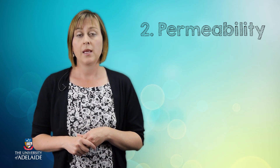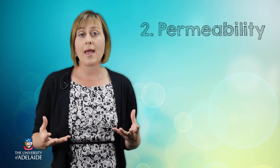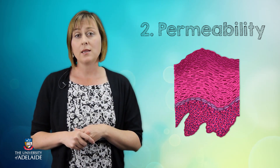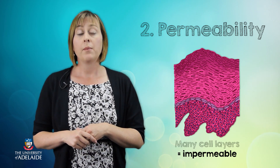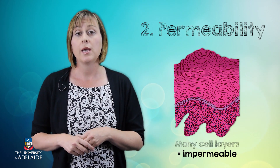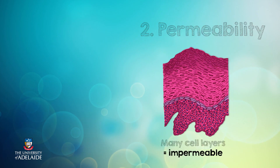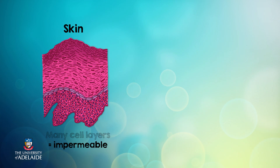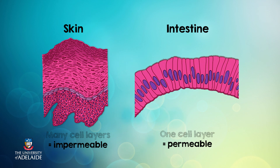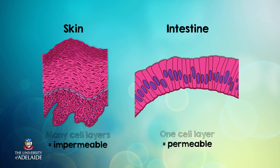Epithelial tissue controls permeability, tightly regulating what can and can't pass through the body. For example, our skin is relatively impermeable, meaning most substances can't easily pass through into our bodies. But this is not the case in the epithelium that lines our intestines — this epithelium is much thinner and it allows for water and nutrients to pass easily through while keeping bacteria out.